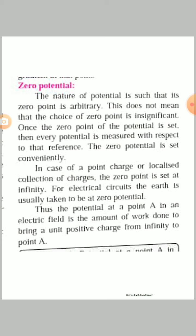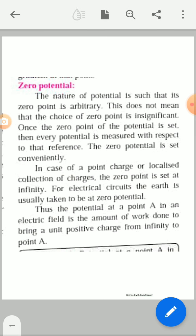What is meant by zero potential? The nature of potential is such that its zero point is arbitrary. This does not mean that the choice of zero potential is insignificant. Once the zero point of potential is set, every potential is measured with respect to that reference. In the case of a point charge or localized collection of charges, the zero point is set at infinity. In electrical circuits, earth is considered the natural zero potential point.